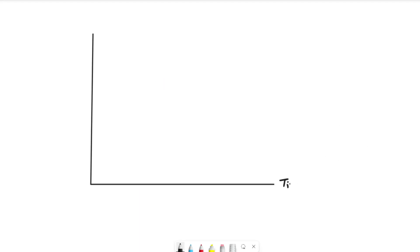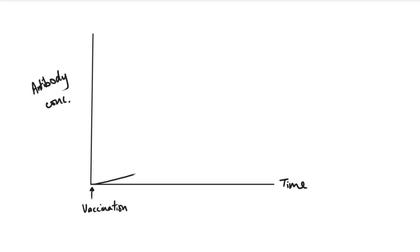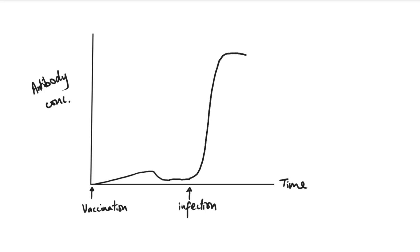Looking at a graph with time on the x-axis and antibody concentration on the y-axis: at the first vaccination or first encounter with the pathogen, there's a slow response — not many antibodies are made, and they're made with a delay. Over time, those antibodies get destroyed and concentration goes back down. However, because of the first encounter, you have produced memory cells.